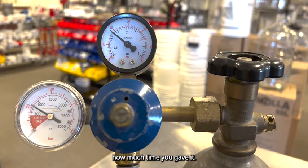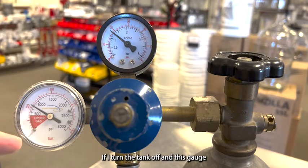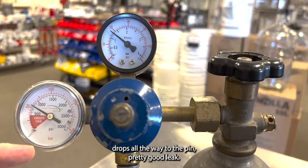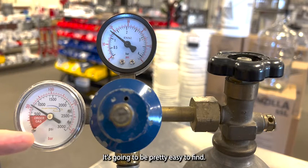That jump indicates we have a leak someplace. Depending on how much that gauge moved versus how much time you gave it, that's how bad our leak is. If I turn the tank off and this gauge drops all the way to the pen, pretty good leak. It's going to be pretty easy to find.